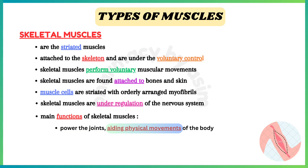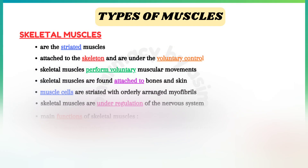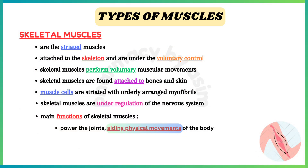The last one is skeletal muscles, which are striated muscles typically attached to the skeleton and are under voluntary control. Skeletal muscles perform voluntary muscular movements and are found attached to bones and skin. They are striated with orderly arranged myofibrils and are under regulation of the nervous system. Skeletal muscles power the joints, aiding physical movements such as walking, running, and writing.